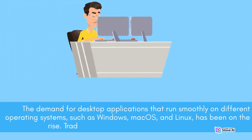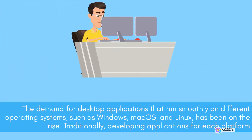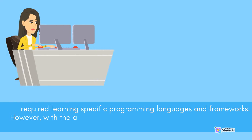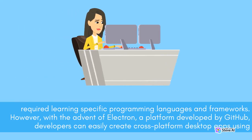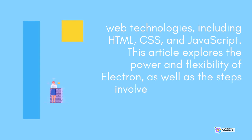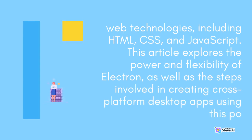The demand for desktop applications that run smoothly on different operating systems, such as Windows, MacOS, and Linux, has been on the rise. Traditionally, developing applications for each platform required learning specific programming languages and frameworks. However, with the advent of Electron, a platform developed by GitHub, developers can easily create cross-platform desktop apps using web technologies, including HTML, CSS, and JavaScript.